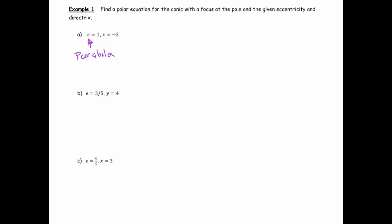It also gets me started on the structure of my equation. Since this has a directrix at x = -3, that means I'm going to be using this form of a conic. That's x = -3, and since that's negative, I'm going to put a negative here.